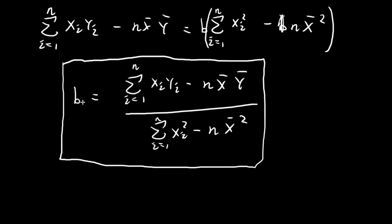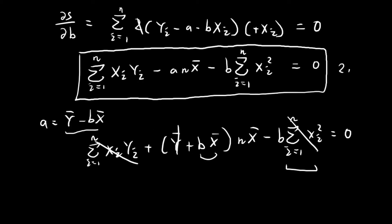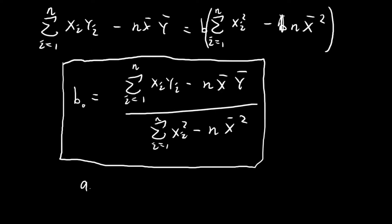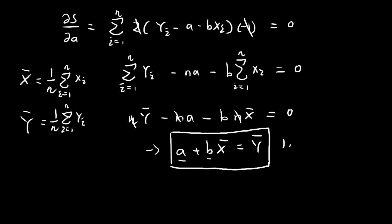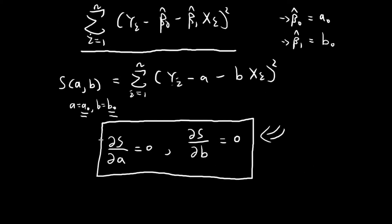So B0 is equal to this expression. And as we've seen, A equals the sample mean of y minus B times the sample mean of x, so A0 is equal to the sample mean of y minus B0 times the sample mean of x. Essentially we're done: this is the formula for B0, and once we find B0, we can immediately derive A0.